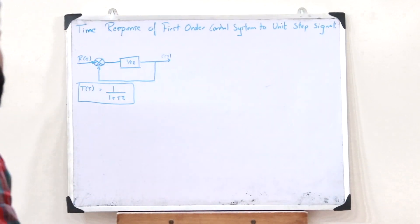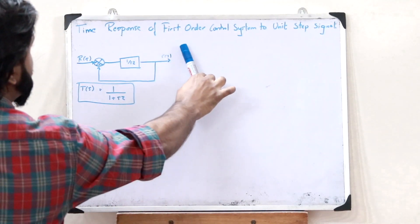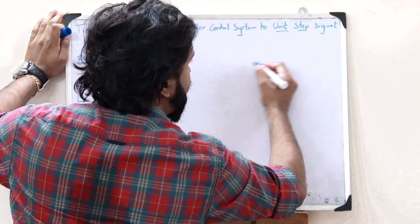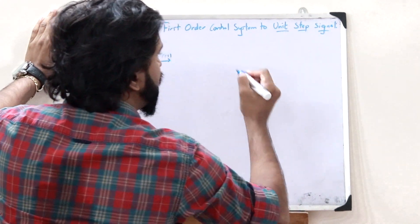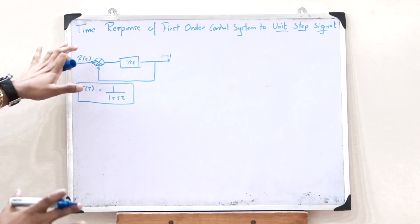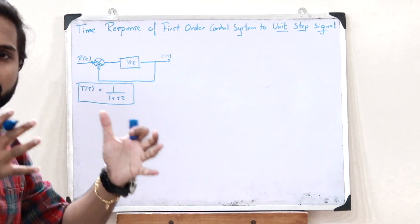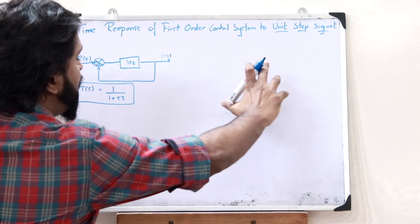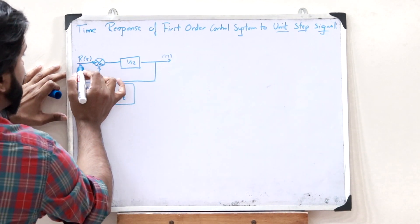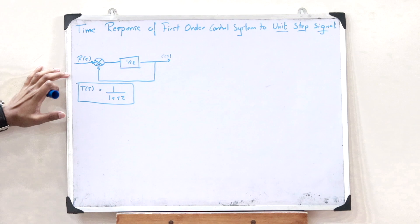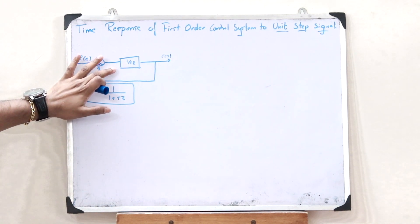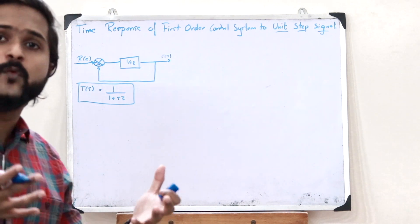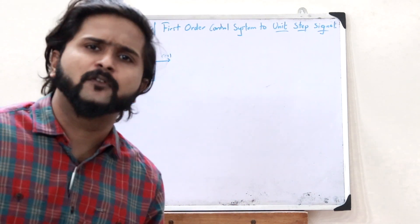First, let us see the time response of a first order control system to a unit step signal. In order to obtain the time response of a first order control system, what we do is apply certain standard test signals as input. This is the general representation of a first order control system.